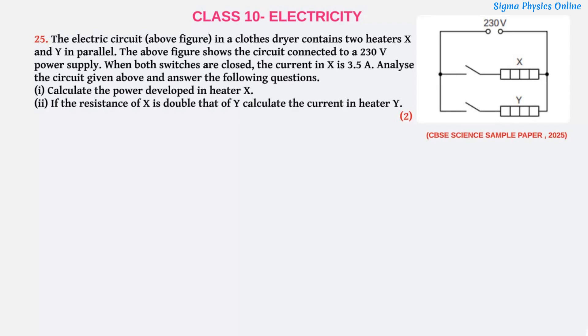Analyze the circuit given above and answer the following questions. First, calculate the power developed in heater X. Second, if the resistance of X is double that of Y, calculate the current in heater Y.